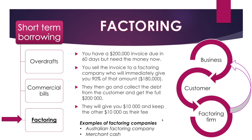Here's how factoring works: you have a $200,000 invoice due in 60 days but need the money now. You sell that invoice — that debt — to a factoring company. They immediately give you 90% of the amount, which is $180,000, almost instantaneously increasing your working capital. The factoring company then goes to the person who owes you the money and collects the full $200,000 at the agreed time.